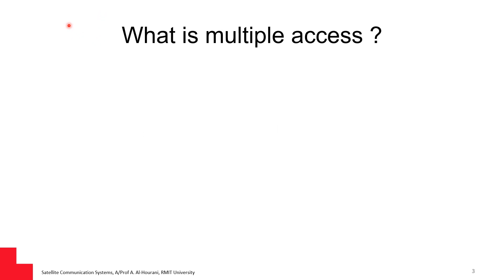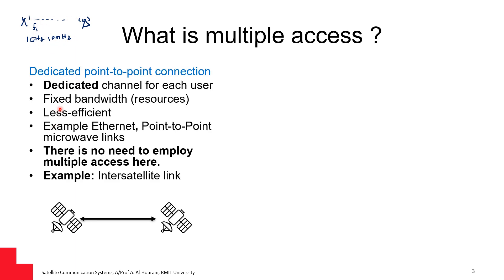In a dedicated point-to-point link, you have a transmitter at one position, and it's transmitting to a receiver at another position, and they're using a channel, let's say some frequency f1 — for example, 1 gigahertz — and a bandwidth of 10 megahertz. This channel, or resources, is being dedicated for this point-to-point link. An example is an inter-satellite link, where the two satellites have a dedicated channel between them.